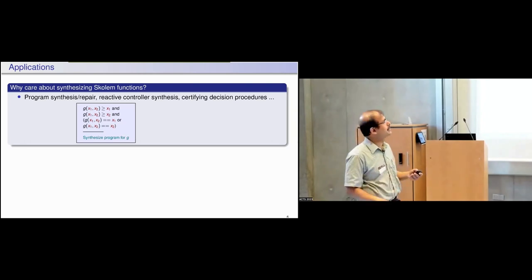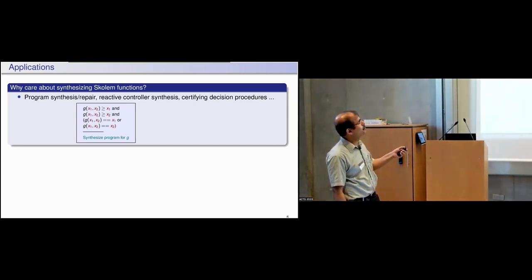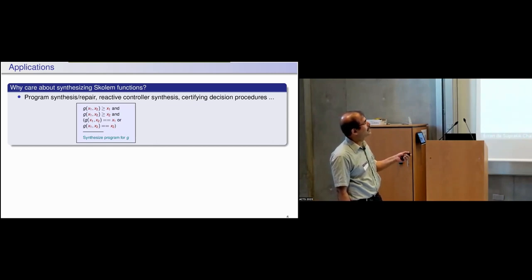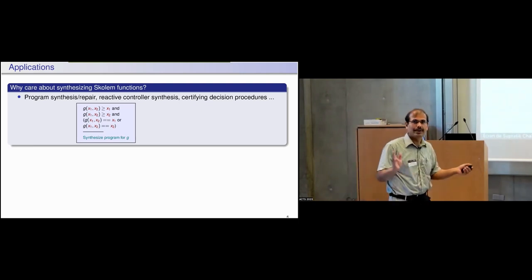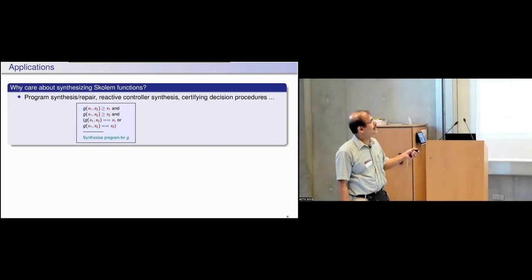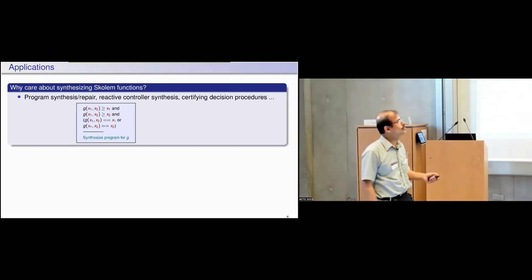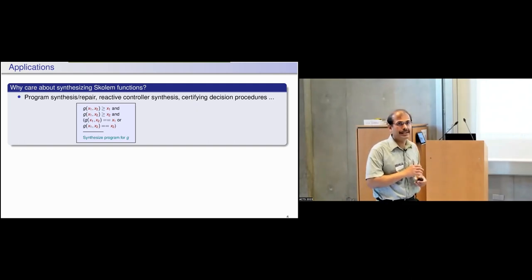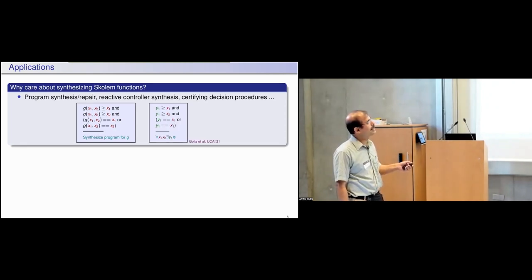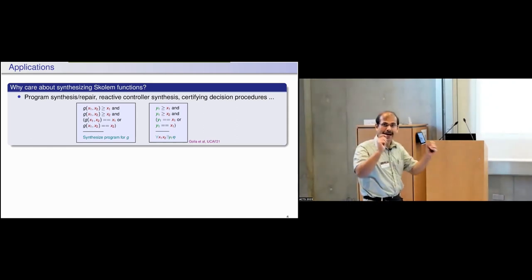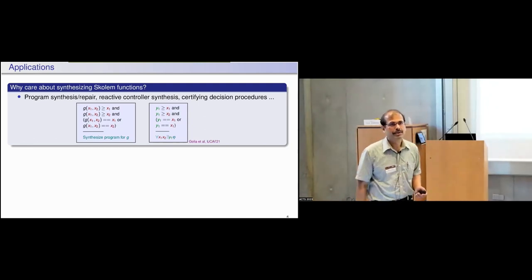Here is a simple toy example: suppose I want to construct a program computing a function g(x1, x2) where the output should be greater than or equal to x1 and greater than or equal to x2, and it is either equal to x1 or equal to x2 — where x1 and x2 are natural numbers. This is the max function. This is a first order logic specification, and once I get the Skolem function for y as a Turing machine, it becomes the program that computes g(x1, x2).